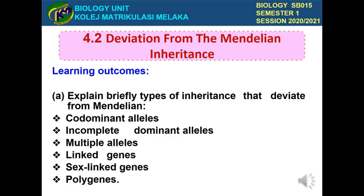In the real world, not every trait is inherited according to Mendelian laws. In fact, most inheritance does not follow Mendelian law — this is called deviation from Mendelian inheritance. By the end of this lesson, you should be able to explain the types of inheritance that deviate from Mendelian law, which are: codominant alleles, incomplete dominance, multiple alleles, linked genes, sex-linked genes, and polygenes. For this lecture, we will briefly explain codominant alleles, incomplete dominance, and multiple alleles.